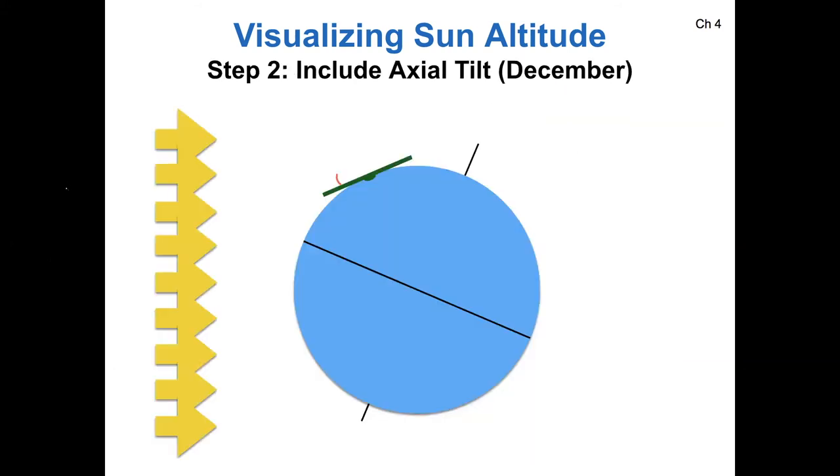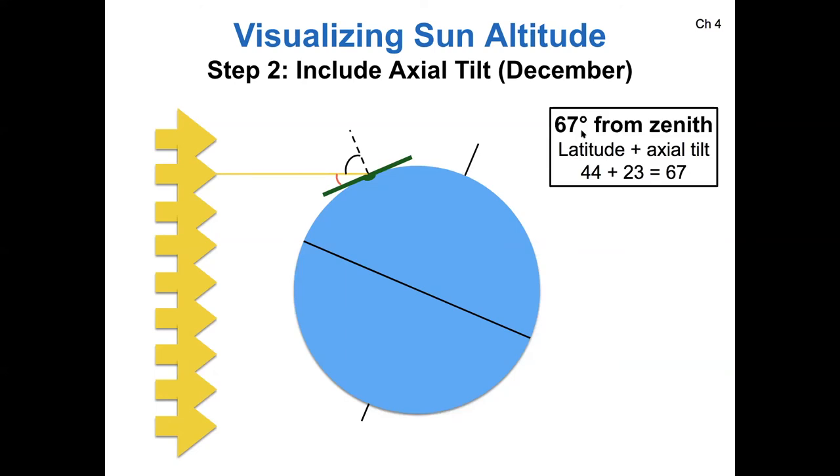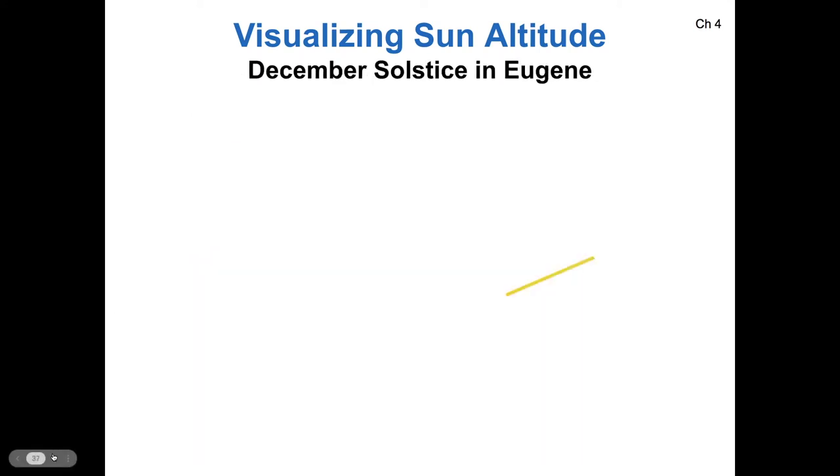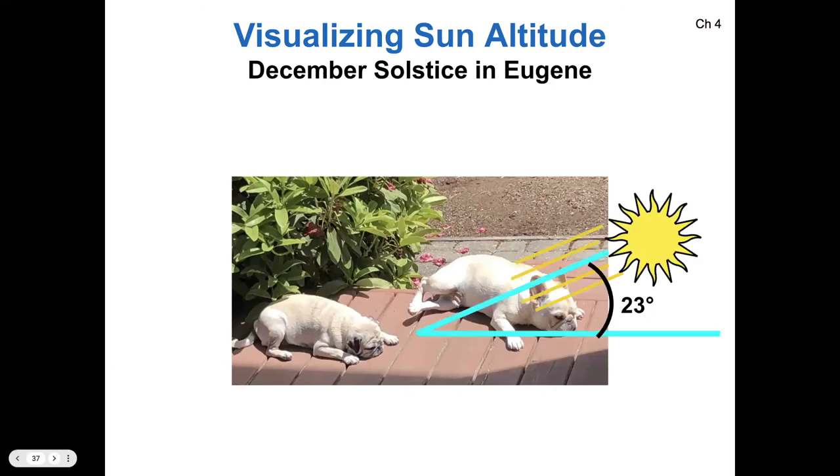The December situation is basically the same. We're going to find the latitude plus the axial tilt now to find our zenith angle, and then the altitude is still found by 90 minus the zenith angle. Now the angle that the sun makes with the horizon is really shallow, specifically 23 degrees above the horizon. The situation in my equation is one sign has changed from going and looking at June versus December.